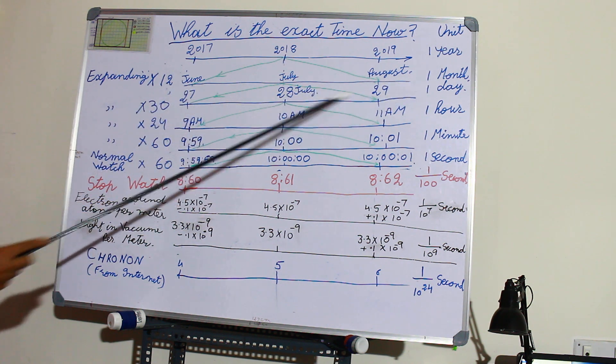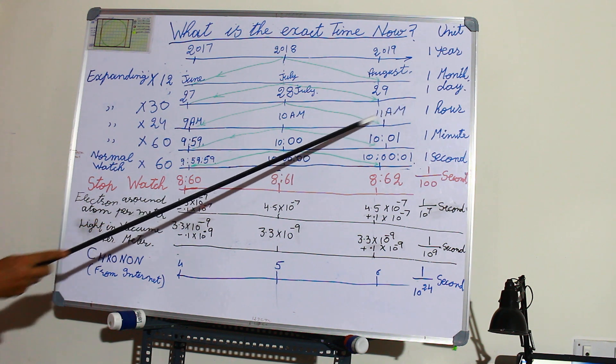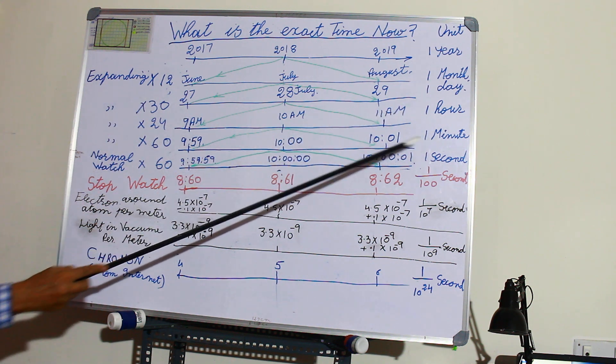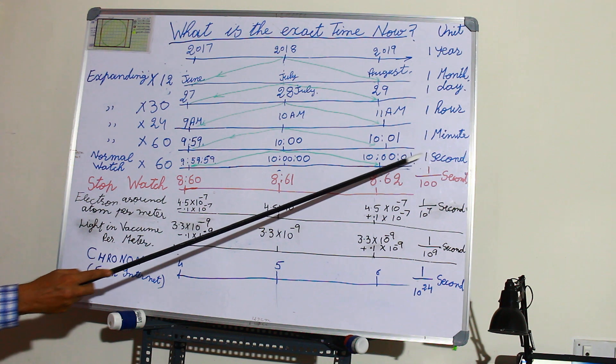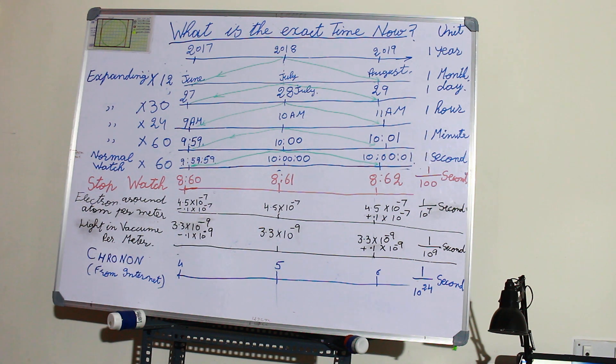Hours, minutes, and seconds. This is what we find on digital clocks now.